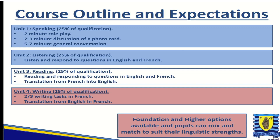Unit three, the reading paper, also contributes 25% to your final grade, and requires you to read and respond to questions in English and French, and complete a translation from French into English. Unit four is the writing paper, again 25% of your final qualification — you will complete two to three writing tasks in French and a translation from English into French, the opposite to the one in unit three.